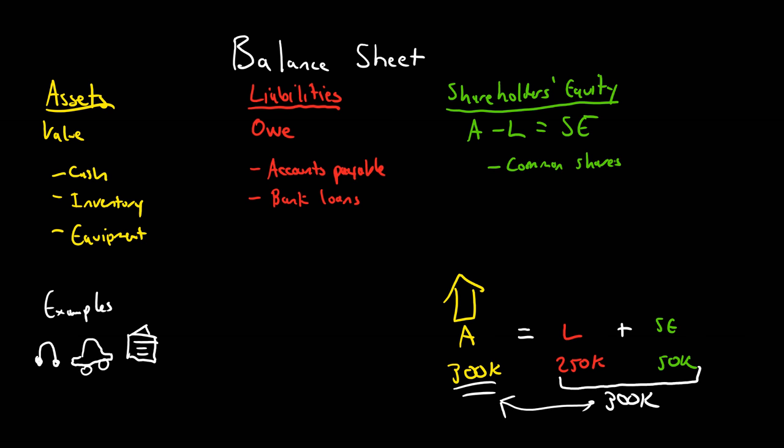The two common accounts here that are most frequently used are common shares, and these are to record when an investor purchases a share. Of course, their piece of the company gets bigger. Their piece of the pie gets bigger, so their equity gets bigger.